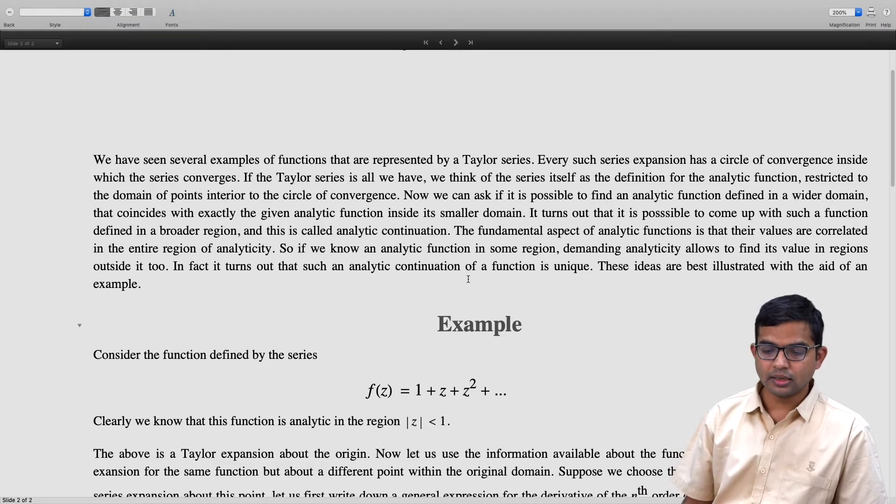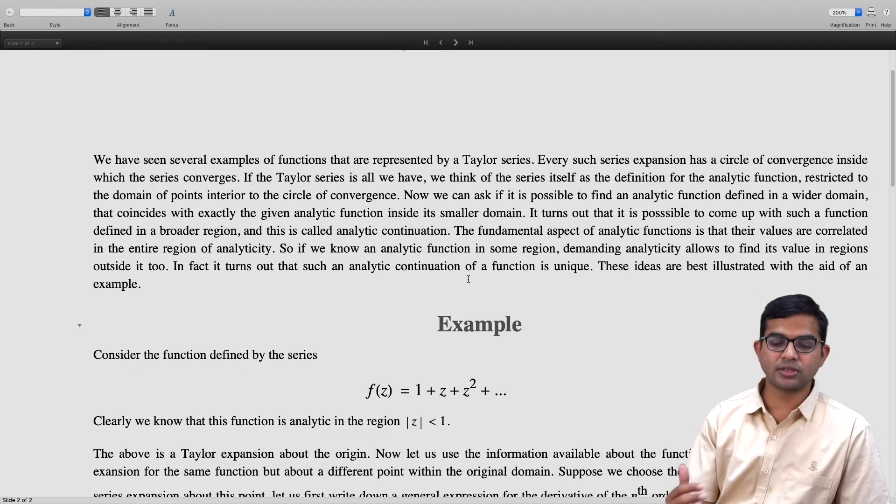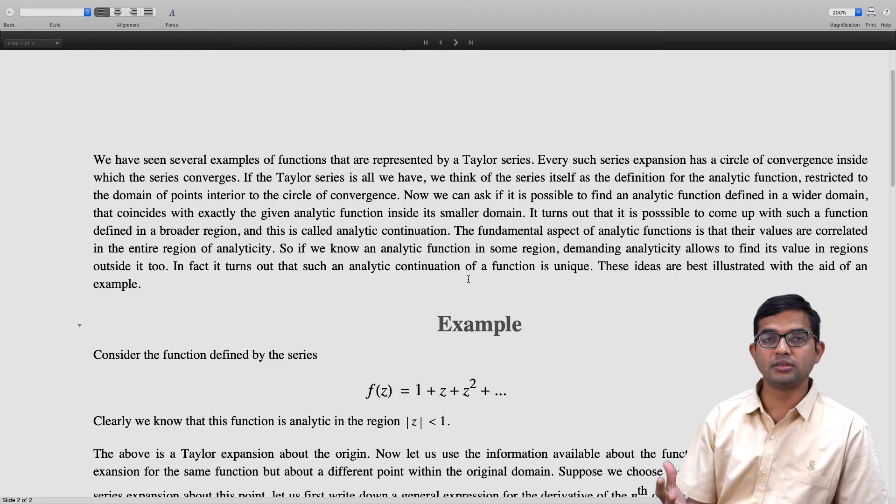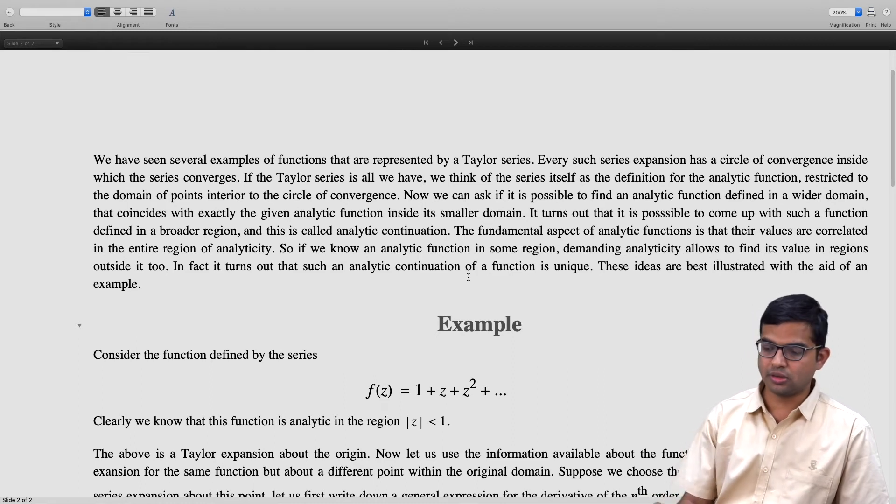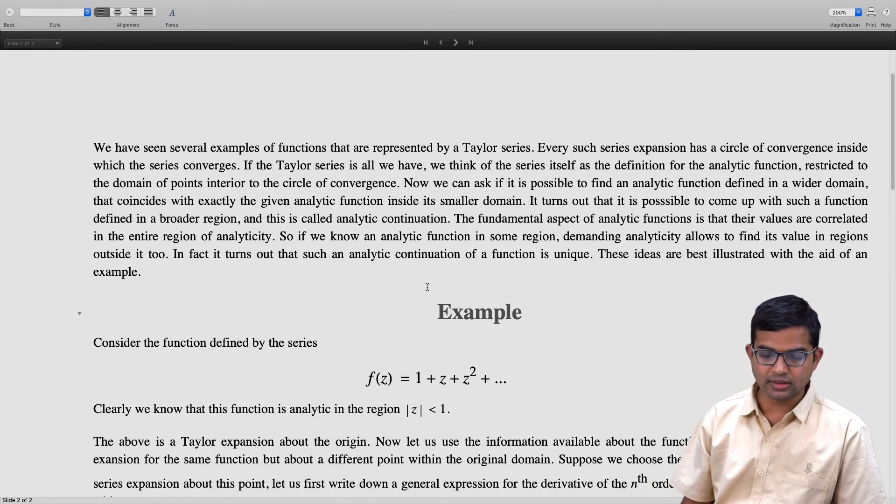This is the information we have. Using this, can we construct a meaningful Taylor series about some other point? Suppose we choose some point z₀ and we want to evaluate the Taylor series expansion about this point.